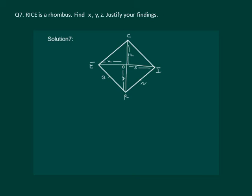Let us read the question. RICE is a rhombus. Find the values of X, Y, and Z and justify your findings.